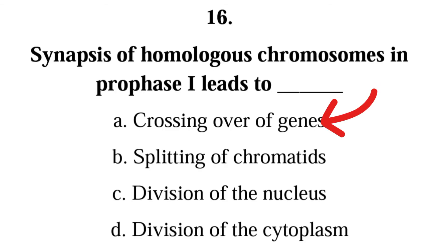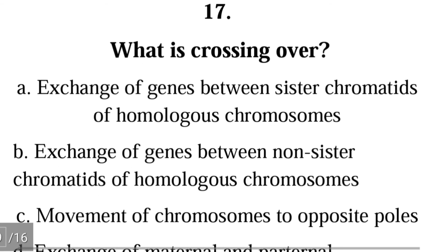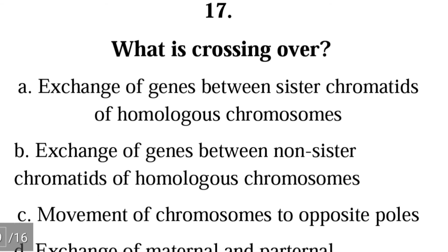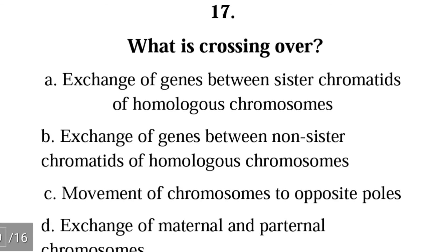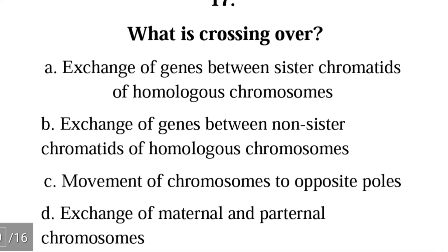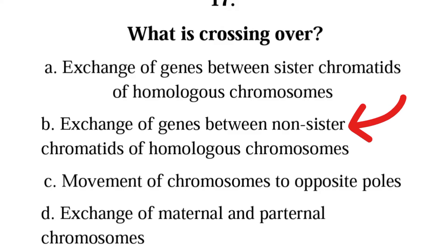The correct answer to question 16 is A, crossing over of genes. Question 17: What is crossing over? A. exchange of genes between sister chromatids, B. exchange of genes between non-sister chromatids of homologous chromosomes, C. movement of chromosomes to opposite poles, D. exchange of maternal and paternal chromosomes. The correct answer is B; crossing over is the exchange of genes between non-sister chromatids of homologous chromosomes.